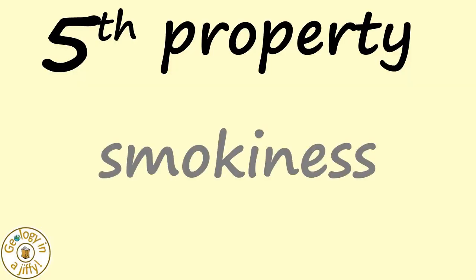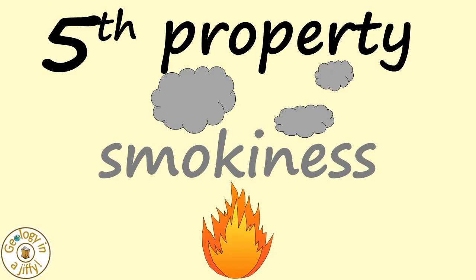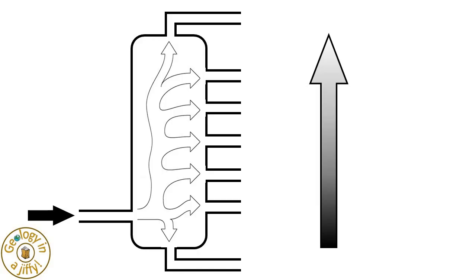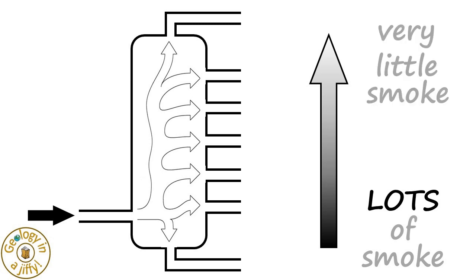The fifth property is the smokiness of the fraction. Some fuels burn very cleanly, others make more smoke, and as we go up our tower, the fractions at the base of the tower have lots of smoke, with a very dirty flame, and the higher fractions have a less smoky, cleaner flame.